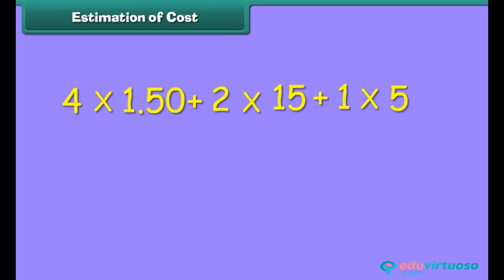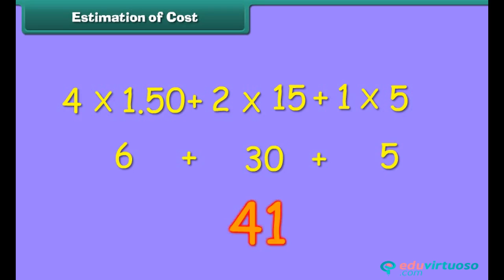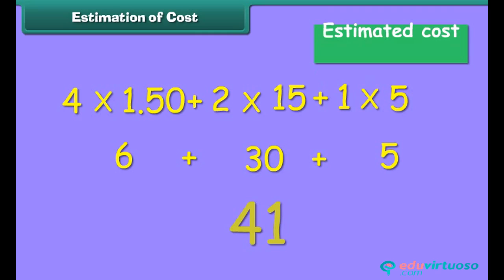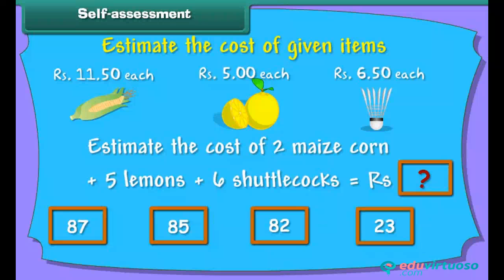We calculate: total cost equals 4 × 1.50 plus 2 × 15 plus 1 × 5. This equals 6 plus 30 plus 5 rupees, which amounts to rupees 41. Thus, this is the estimated cost.